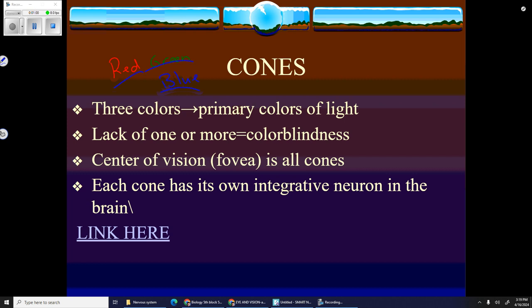You have three different cones that are sensitive to that wavelength of light. Blue cones are sensitive to blue wavelengths, red cones to the red wavelengths, and green cones to the middle green wavelengths.